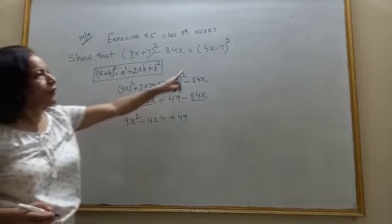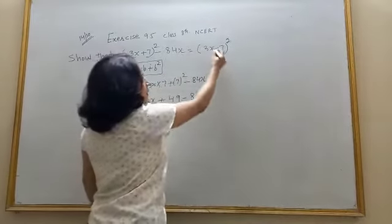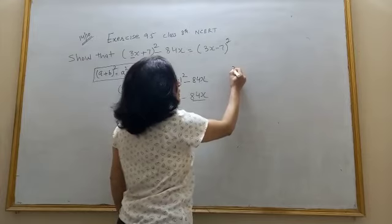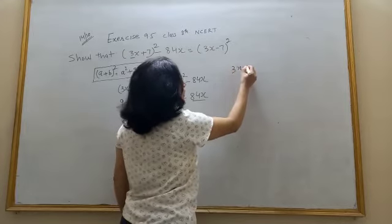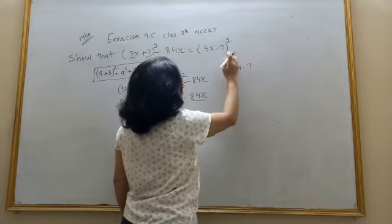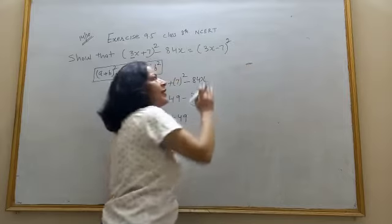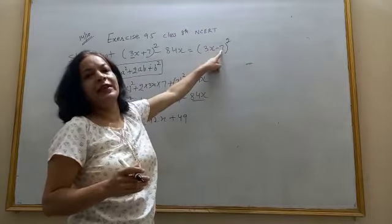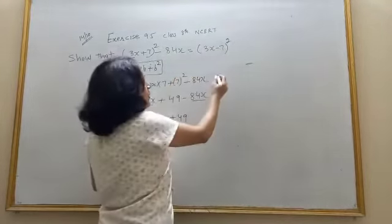Now I will solve right hand side. 3x minus 7 whole square. So it will be which identity? First term minus second term whole square.